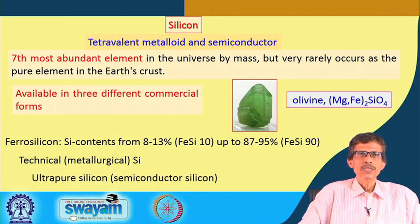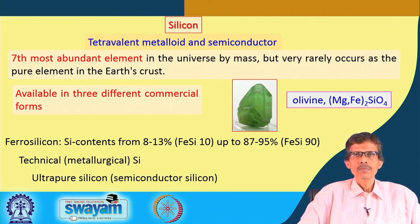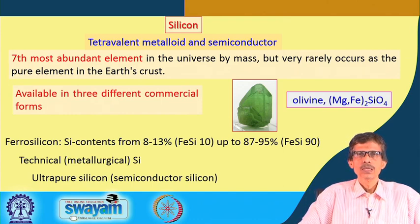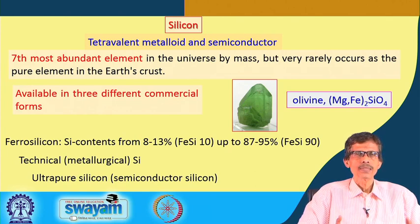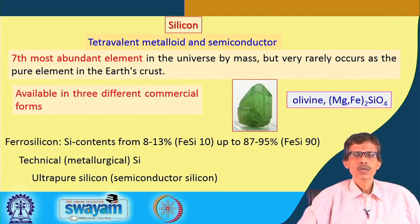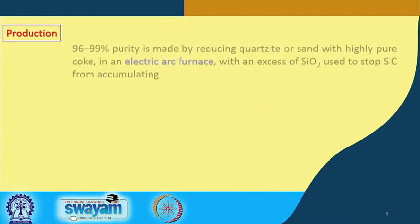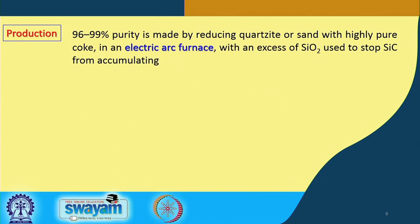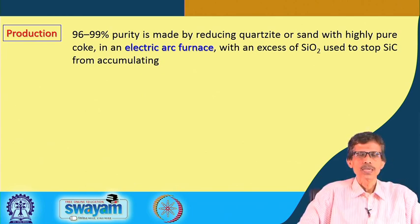The ultra-pure silicon form is what we use as semiconductor silicon, whether for making solar cells or components of computers. The entire computer industry — the silicon valleys — is purely dependent on the amount of good-quality silicon available for making hardware. Production is basically dependent on a range where 90-plus percent — from 96 to 99 percent purity — can be obtained by reducing quartzite or sand.